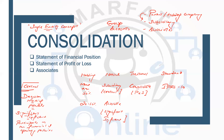For associates — 20 to 50% holding with significant influence — the treatment is equity accounting. We prepare the consolidated statement of financial position and the consolidated statement of profit and loss, applying equity accounting for associates.